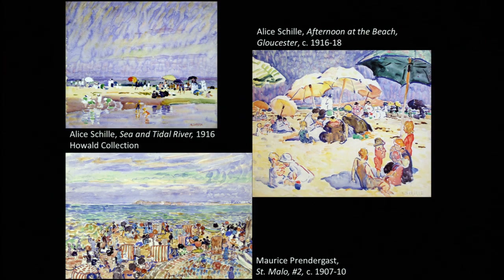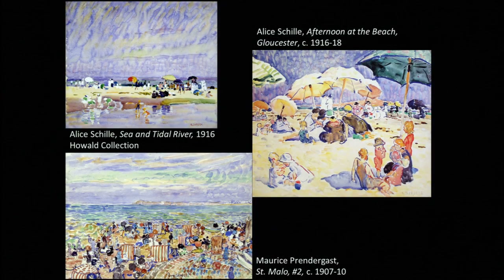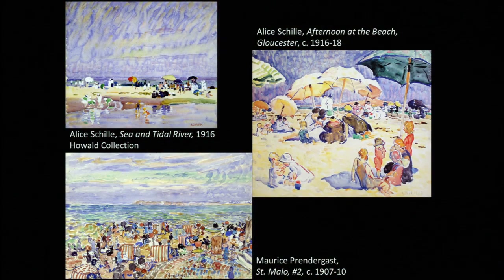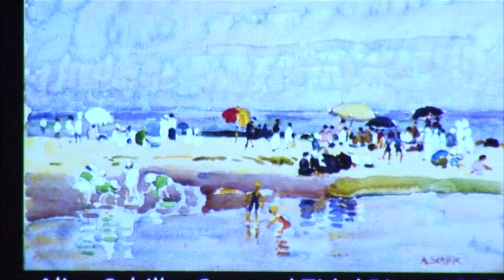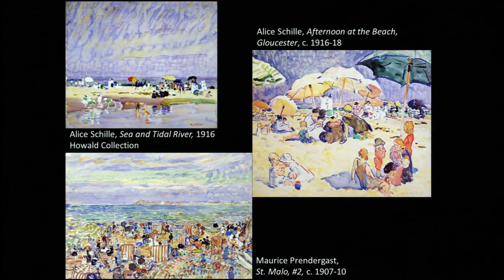A few years later, she comes back from France, and she and a number of the women artists featured in the Capitol show end up in two key art colonies—one is Gloucester, where Schilly goes, and another is Provincetown. When these figures get together, it's as if all the modernist aspects they were seeing in Europe just pop and gel. You've got this amazing explosion of color—arbitrary, really rich, vibrant—reductive designs, outlining associated with the Fauves, expressive skies, and a real flowering of modernism. You can see aspects of pointillism in the Sea and Tidal River to the left.